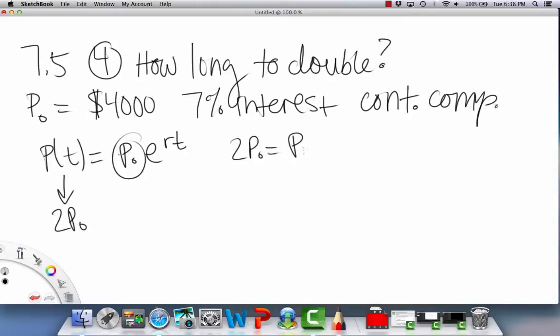I also did this in the concept video, but I'll do it again real quick, so you can see the process. So we're going to solve for t. We can cross out the initial, and then we get 2 equals e to the rt. And when you solve for t, we get ln of 2 divided by r,